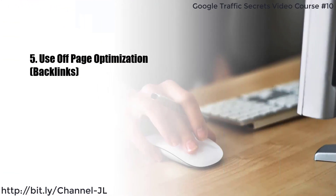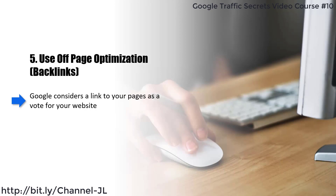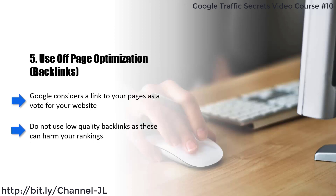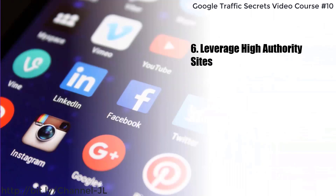Five: use off-page optimization and backlinks. Google considers a link to your pages as a vote for your website, so get as many high authority backlinks as you can. Do not use low quality backlinks as these can harm your rankings. You need a natural mix of links that contain some with anchor text, bare links, do-follow and no-follow.